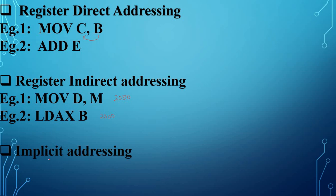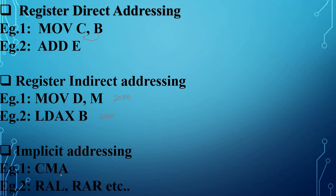The last addressing mode is implicit addressing mode. Certain instructions operate on the content of the accumulator and do not require the address of the operand to be specified — the operand is implied in the instruction itself, so they are called implicit or implied addressing mode. Examples are CMA (complement accumulator), RAL (rotate accumulator left through carry), and RAR (rotate accumulator right through carry) — all have no operand field.